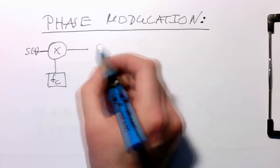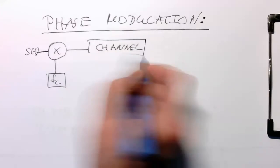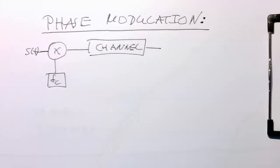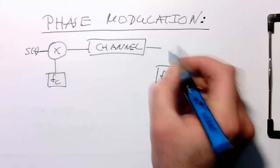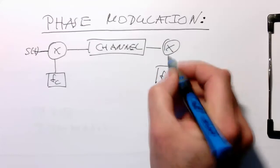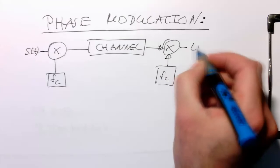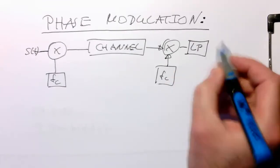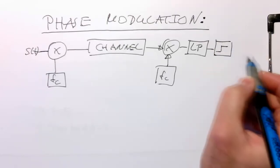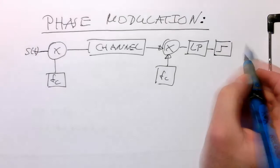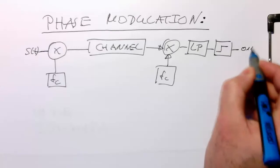Then we send this to our channel, and on the receiving side again we've got our carrier FC, and we again multiply with that. We low-pass filter it, send this through a threshold or some decision unit, and then we're getting back our bitstream.